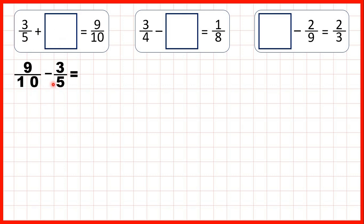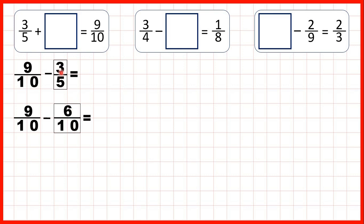To subtract fractions we need the denominators to be the same. Now 10 is in the 5 times table, so we can find an equivalent fraction to 3 fifths which has a denominator of 10. So we can rewrite our question: the 9 tenths stays the same, but instead of subtracting 3 fifths we subtract 6 tenths. That's equivalent to 3 fifths because 5 times 2 is 10 and 3 times 2 is 6. Now the fractions have the same denominator, so the denominator stays the same in our answer and 9 minus 6 is 3. So our missing fraction is 3 tenths.